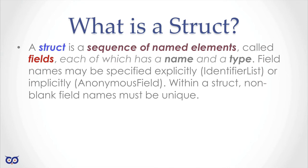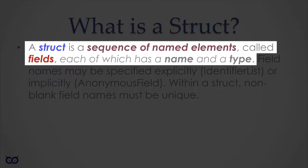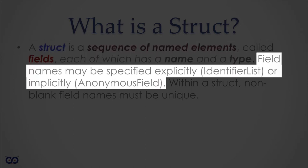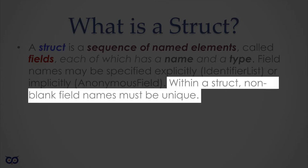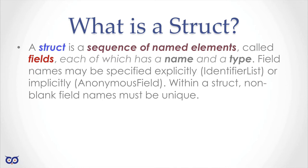Let's start with a definition taken from the Golang documentation. It says a struct is a sequence of named elements called fields, each of which has a name and a type. Field names may be specified explicitly or implicitly. Within a struct, non-blank field names must be unique. That's a lot to chew on, so we'll keep that in the back of our heads. Before we embark on learning something new, it helps to revisit what we've already learned so we can compare and contrast.